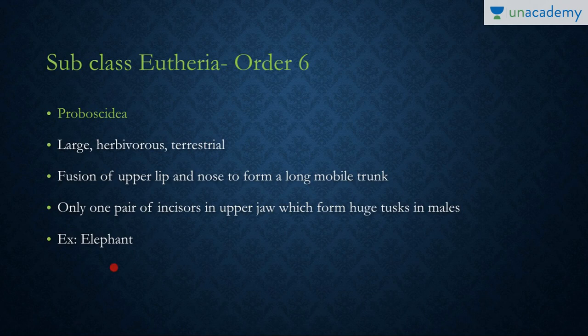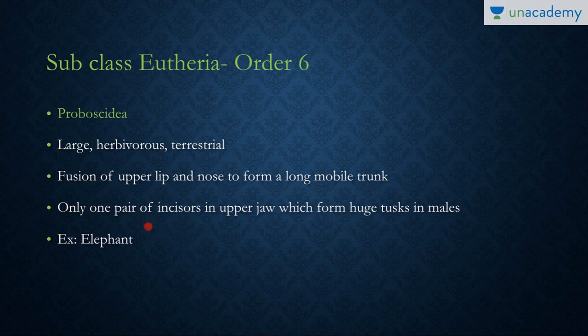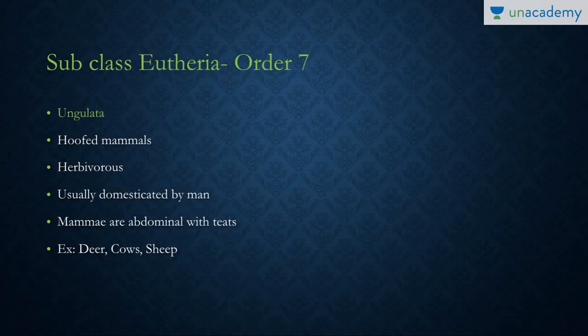Order six is Proboscidea, which are large herbivorous terrestrial organisms. The most important example is the elephant (Elephas). They have a fusion of the upper lip and nose to form a long, mobile trunk. Only one pair of incisors in the upper jaw is present, which forms huge tusks in males.